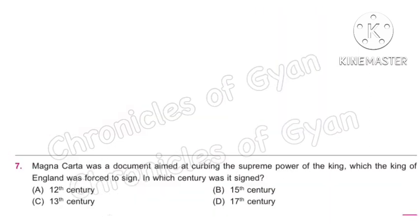Question 7: Magna Carta was a document aimed at curbing the supreme power of the king, which the king of England was forced to sign. In which century was it signed? It was signed in June 1215, which falls in the 13th century — Option C. Magna Carta was the first document to put into writing the principle that the king and his government were not above the law.